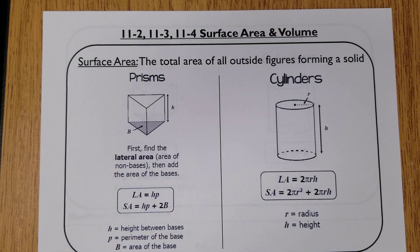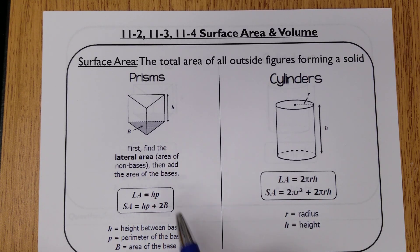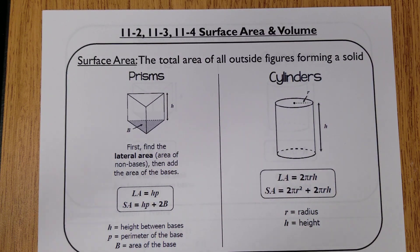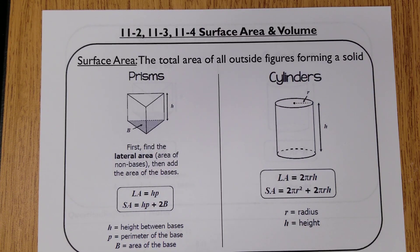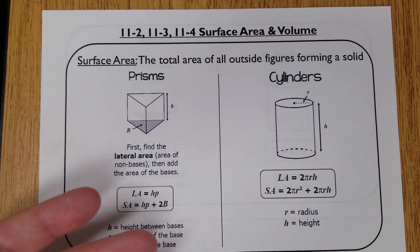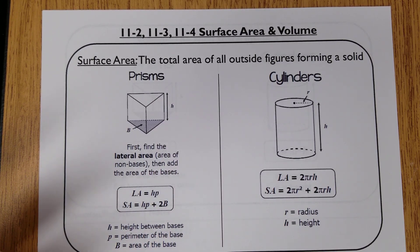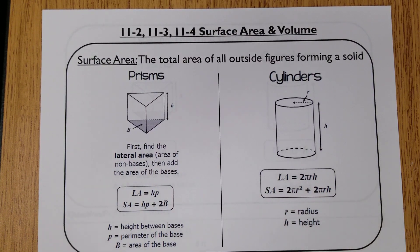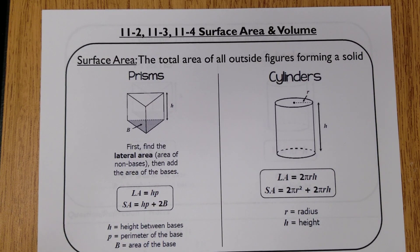Hello everybody. For this next set of sections we're going to combine 11.1, 2, 3, and 4 together into a single concept known as surface area and volume. The textbook splits it into different sections based on each individual 3D figure, but rather than spend a lot of days on it, we're going to combine it all into one. You just need a formula based on how the shape is constructed, then plug the numbers in and grab a calculator — pretty much the same lesson as perimeter and area, except now the figures are three-dimensional.